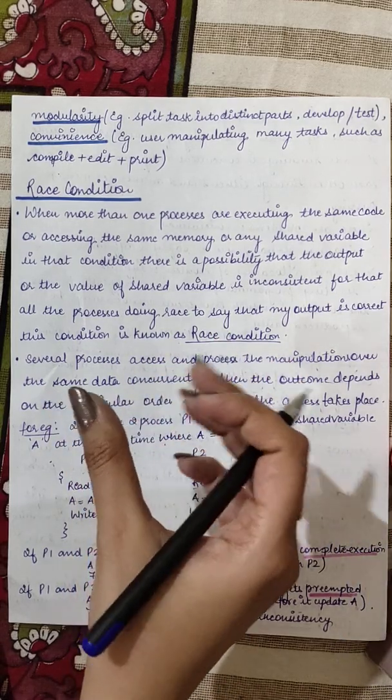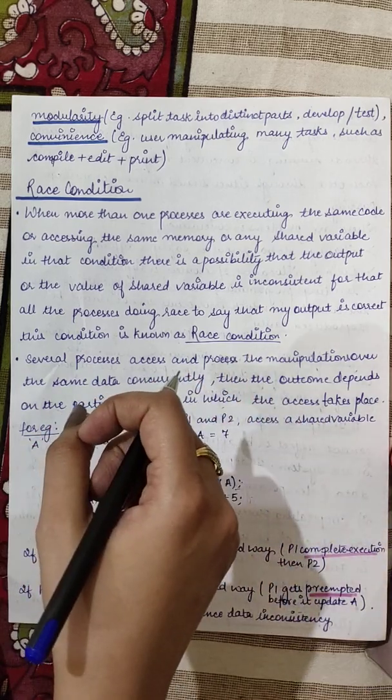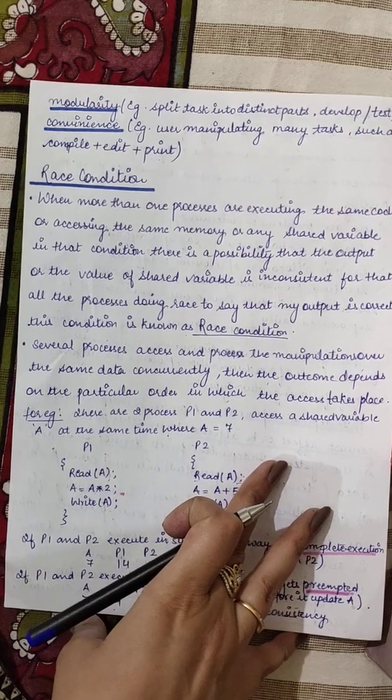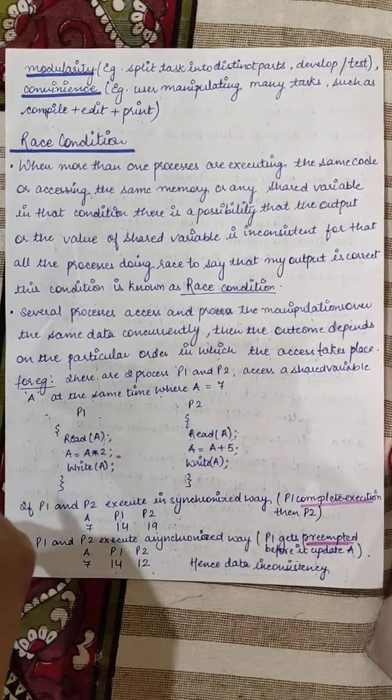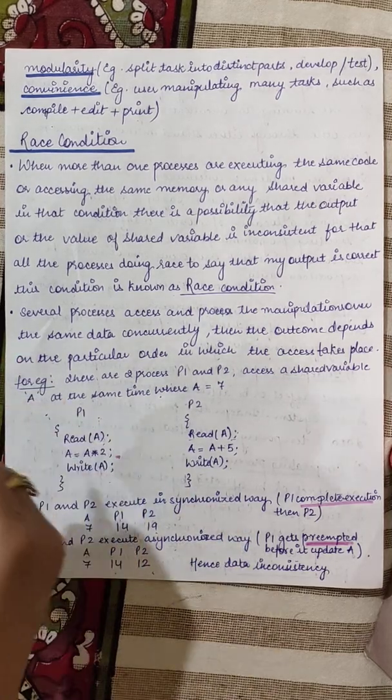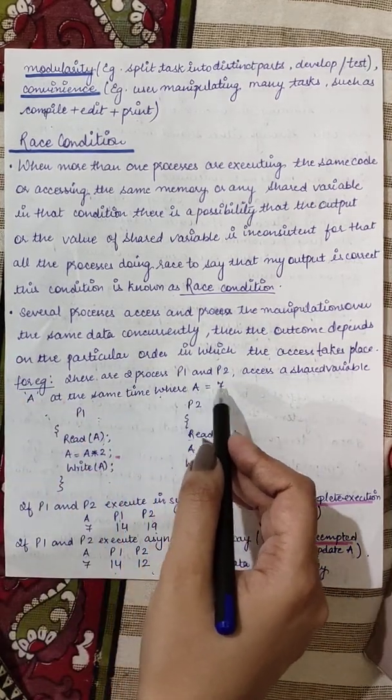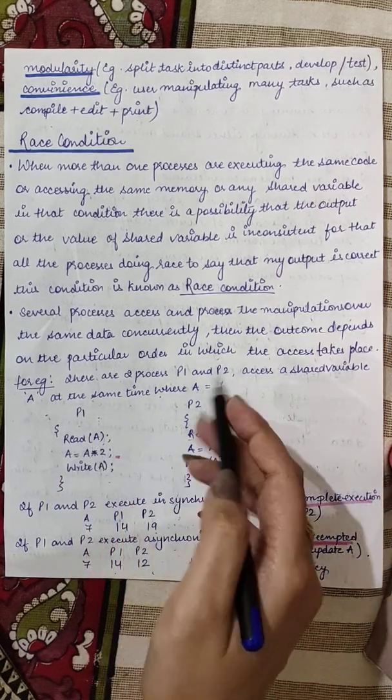Then there will be data inconsistency which will arise. So har process ki jo yeh hold ho rahi hai ki mera output sahi hai and us shared resource ko yeh wali value deni hai, woh hota hai race condition. So ab is race condition mein ek example hum dekh lete hai kyunki is race condition se hume data inconsistency ka saamna karna padta hai. Aapko samajh mein nahi aayega ki which data is the right one.